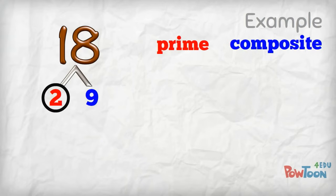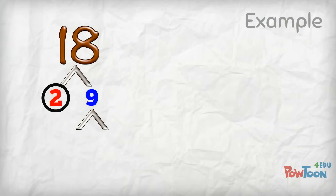I circle 2 as a prime number. I will come back to it later. 9 is a composite number so I split it down. I get 9 from 3 times 3. 3 is a prime number so I circle both of them too.